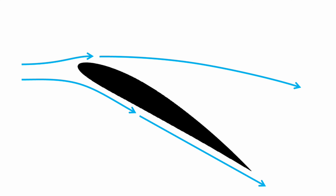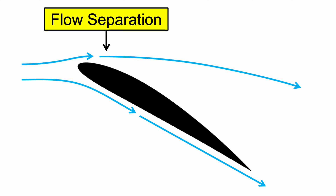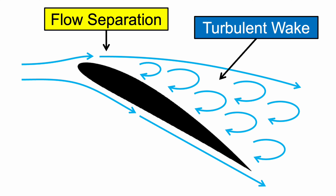When the angle of attack is increased too much, the streamlines are unable to follow the curve around the top of the airfoil and separate from the surface. This creates a turbulent wake, just like we saw in the drag force video. When the angle of attack is increased to the point where the flow separates, the airfoil is said to have stalled. When this happens, the lift force stops increasing, and the drag force increases significantly as well. Stalls are very dangerous for airplanes, and can often cause crashes if lift force is lost.